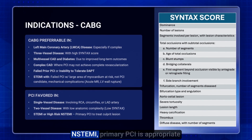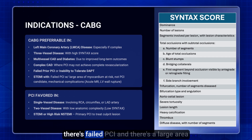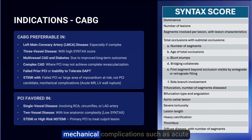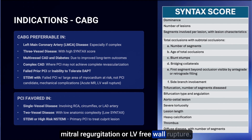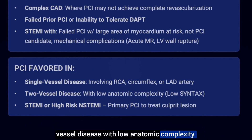Oftentimes, STEMI or high-risk NSTEMI primary PCI is appropriate to treat the culprit lesion. However, we may prefer cabbage when there's failed PCI with a large area of myocardium at risk, when the patient is not a PCI candidate, or if there are mechanical complications such as acute mitral regurgitation or LV free wall rupture. PCI is typically more preferable in single-vessel disease or two-vessel disease with low anatomic complexity.